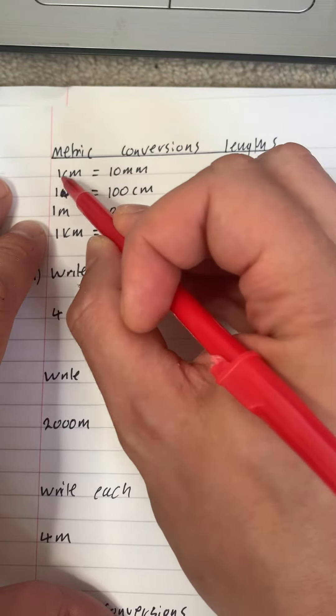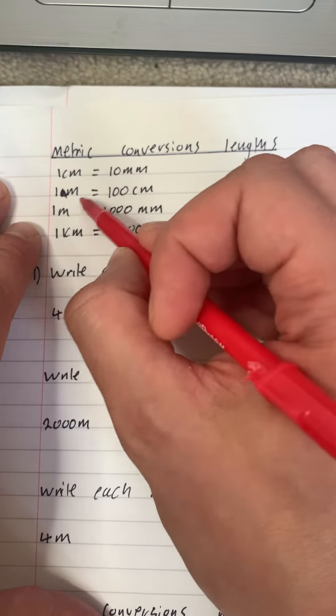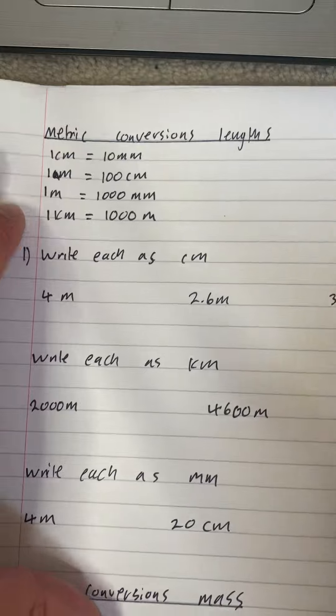So centimeters to millimeters, we times by 10. To get to centimeters, we divide by 10. And these are ones that you should all know.